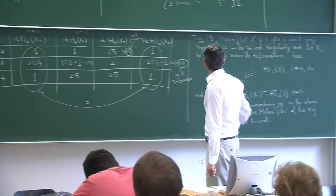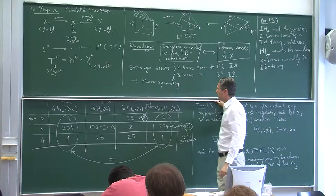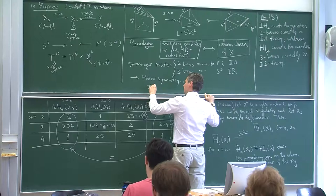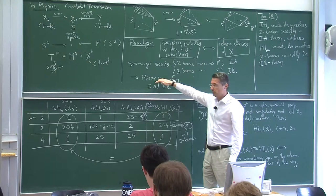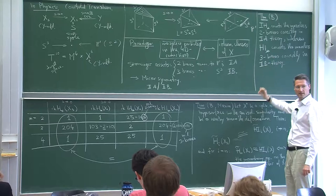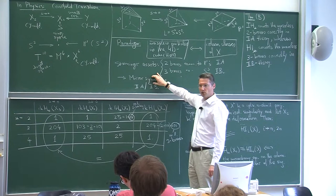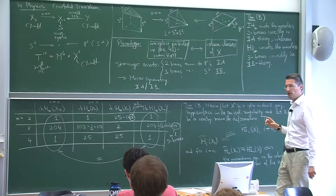The theorem is: intersection homology counts the massless two-branes correctly in type IIA theory, but it does not count the three-branes correctly. Previously, there was no theory that did the other half correctly. The theory HI introduced here counts the massless three-branes correctly in type IIB theory.